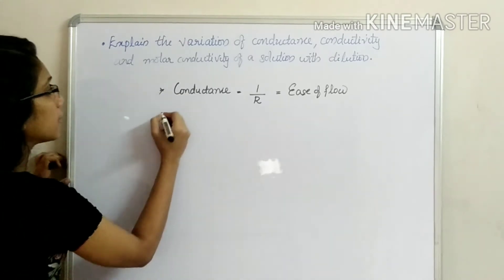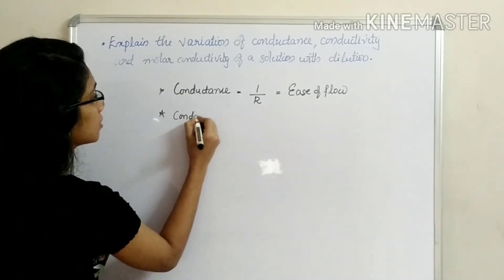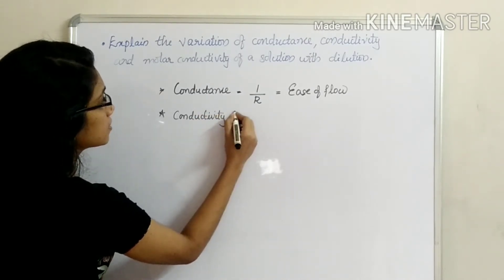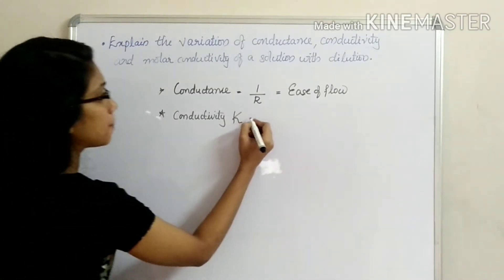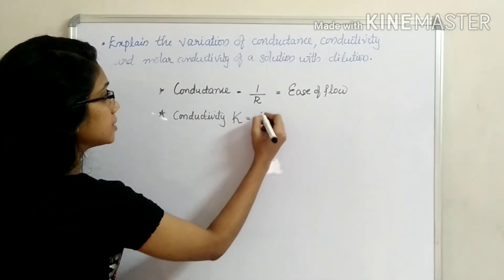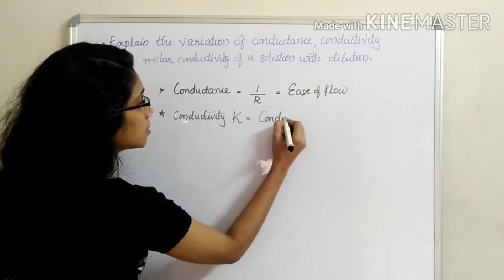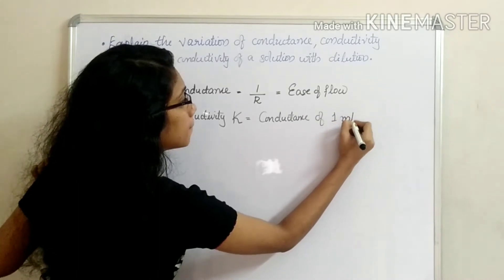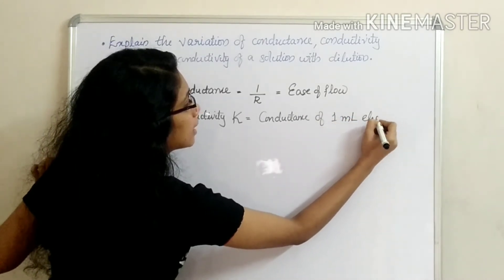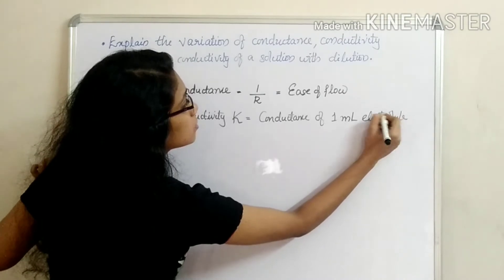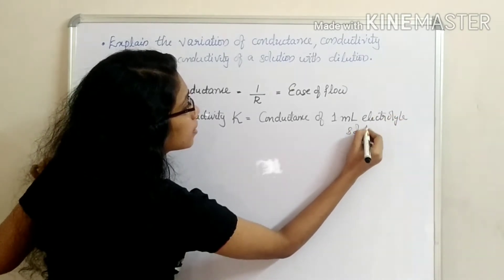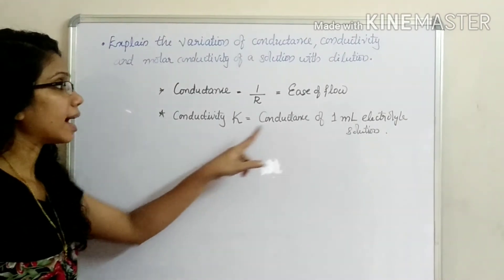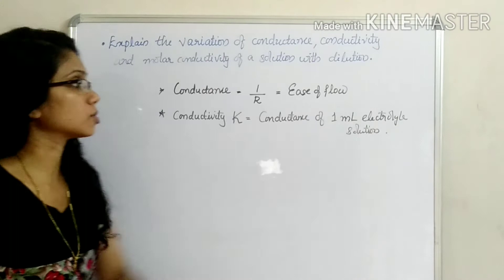Next, we will define conductivity. Conductivity is represented by the letter K, kappa. It is the conductance of 1 mL of electrolyte solution.